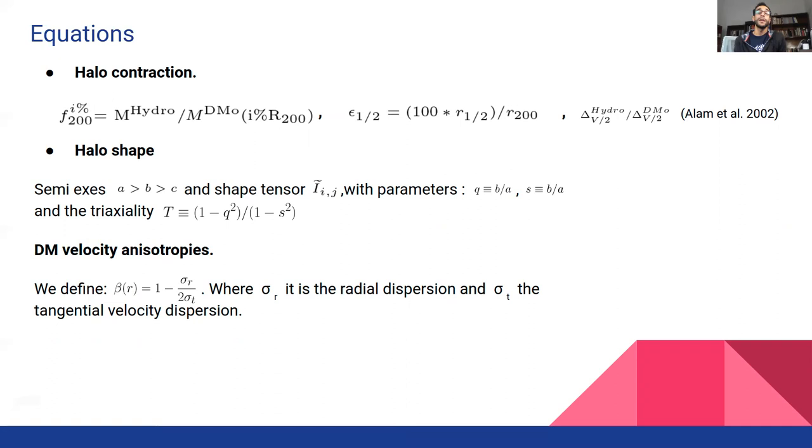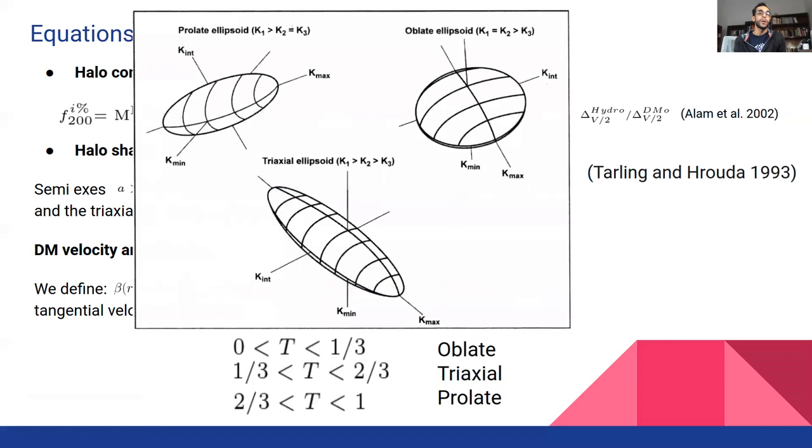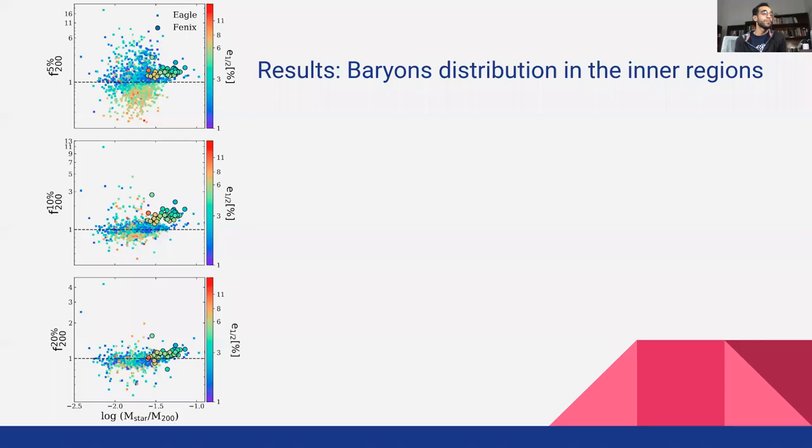Finally, the velocity anisotropy beta is defined as we showed here. Here we show the typical relations between the shape parameters and the resulting halo morphologies.